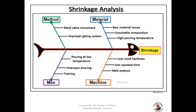This is a conventional fishbone diagram for shrinkage with four Ms — Method, Material, Man, and Machine. In Method: mold wall movement, improper gating system. Material: raw material issues, unsuitable composition, high pouring temperatures. Man: pouring at low temperature, improper pouring and training awareness. Machine: low mold hardness, low squeeze time, melt analysis. This is the general fishbone diagram for the shrinkage defect.